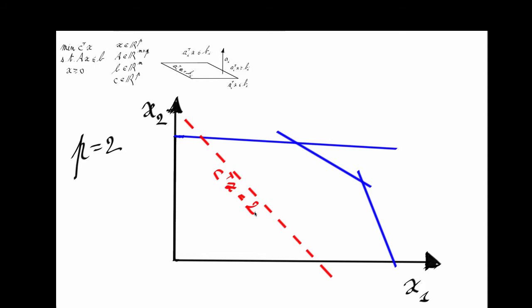Now we would like to make this value as small as possible. We draw all points with C transpose X equals 1, which is lower than the previous one. As you see, this line is parallel to the other one — we call it a level line, corresponding to level 1 of the objective function. It is strictly better in the sense that the value of the objective function is strictly lower. All points at the intersection of this line and the polyhedron are feasible points with a better value of the objective function.